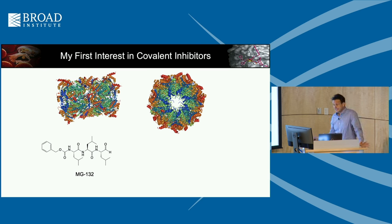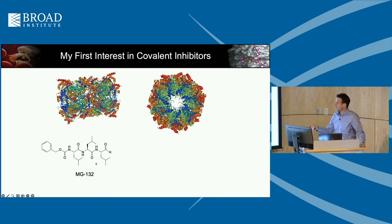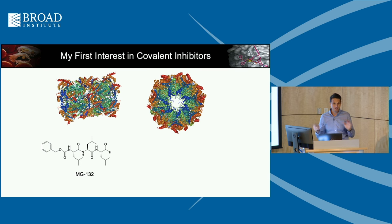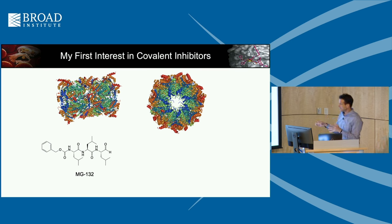We needed an inhibitor of the proteasome to block that process. There was a company called Myogenics that Fred Goldberg had started, producing a molecule called MG132 — a peptide aldehyde that was not commercially available. Hidde came to me and said we need a proteasome inhibitor, we can't buy it. I looked at it, said it's very simple, let's make it. So I set up chemistry in Hidde's lab and we made this molecule.